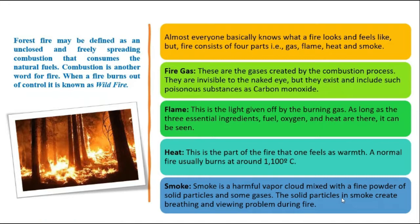Heat is one of the most important components of forest fire. It makes the forest fire spread easily — when fire happens, it creates heat, and from that heat, other portions of the forest fuel are consumed in the presence of oxygen. This heat is the infrared component of the electromagnetic spectrum, and the temperature can be around 1,100 degrees centigrade.